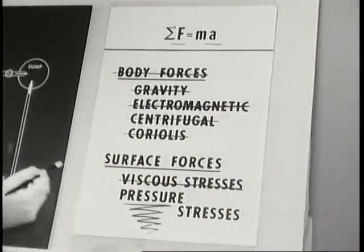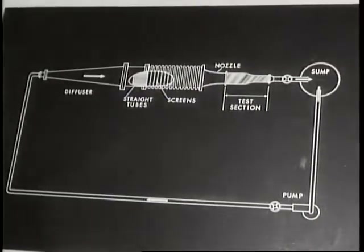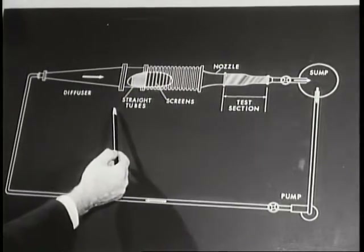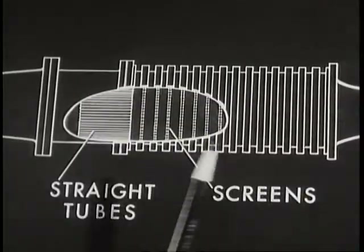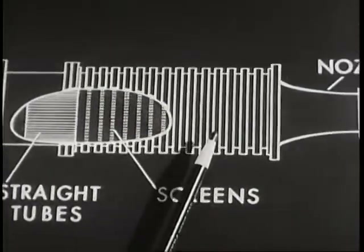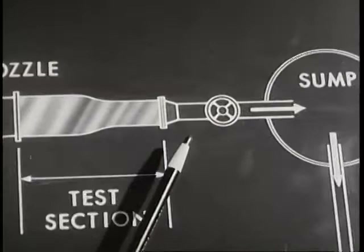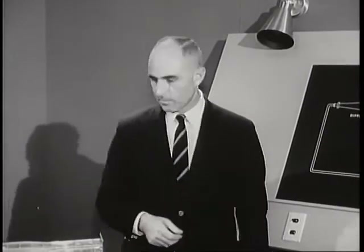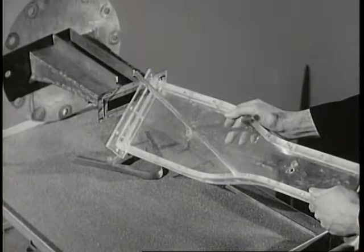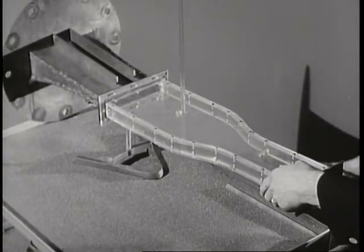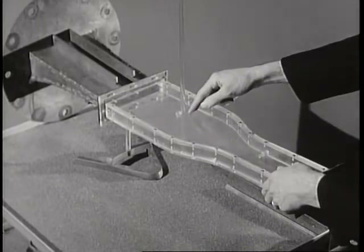All the experiments will be in steady flow. This is the test circuit used for many of the experiments. Water from the sump is pumped to the diffuser and into this large low-speed settling chamber. The honeycomb straightens the flow and these screens reduce the turbulence level. The flow is accelerated by this nozzle into the test section and then discharges back to the sump. Our first experiments have to do with changes of pressure and velocity in the streamwise direction. Our first test section is a contraction of cross-sectional area. Static pressure manometers are located at the upstream and downstream cross-sections.